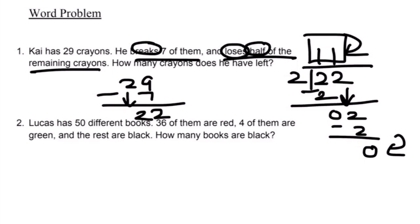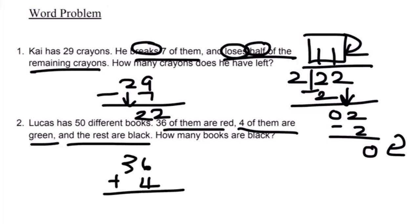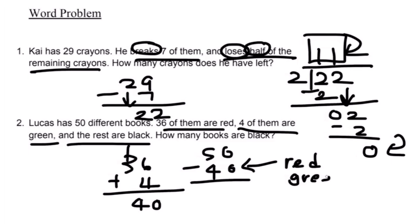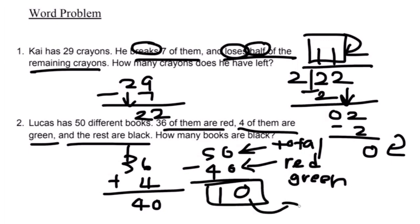Number two: Lucas has 50 different books. 36 of them are red and 4 of them are green, and the rest are black. How many books are black? We know 36 are red and 4 are green, so first add 36 plus 4: that equals 40. That means 40 of the 50 books are red and green. Now subtract 50 minus 40 to find the black books: 0 minus 0 equals 0, 5 minus 4 equals 1. Therefore, 10 books are black out of the 50 different books.